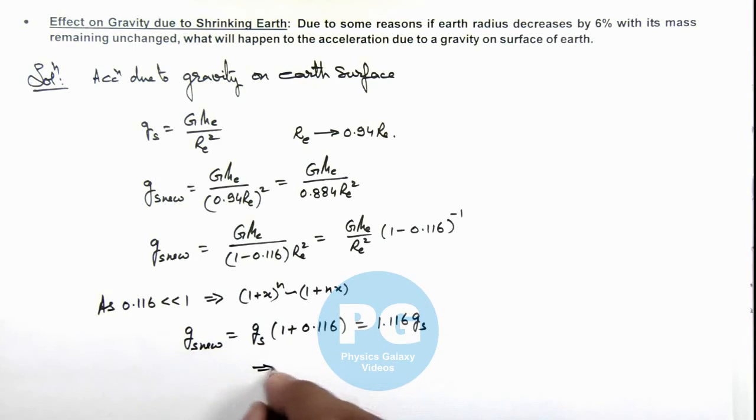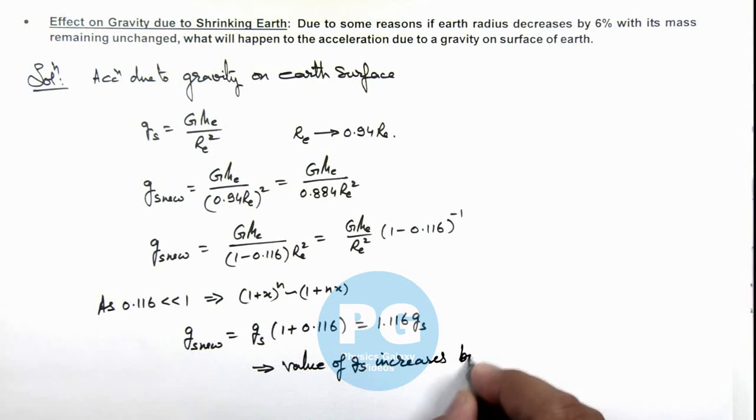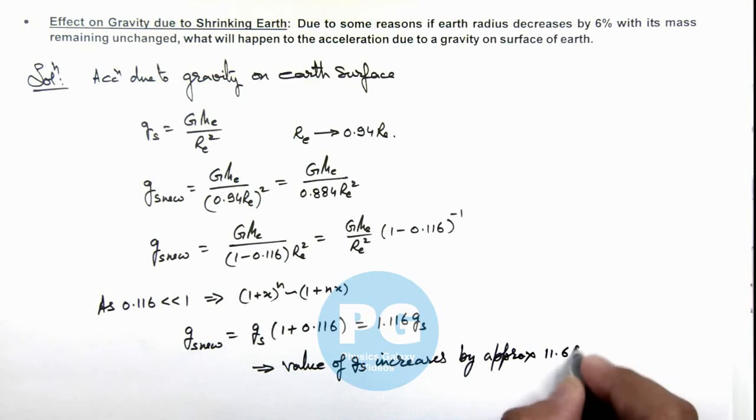This implies the value of g_s increases by approximately 11.6%. This is the result of this problem.